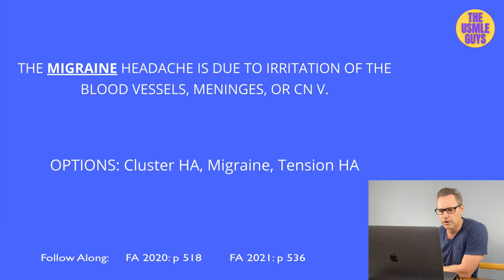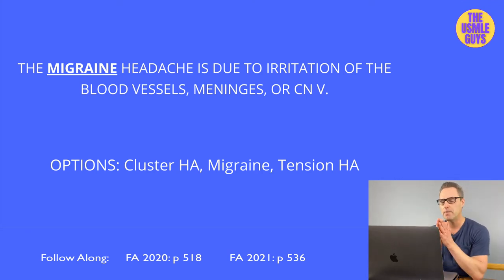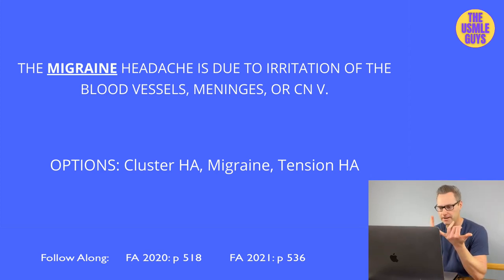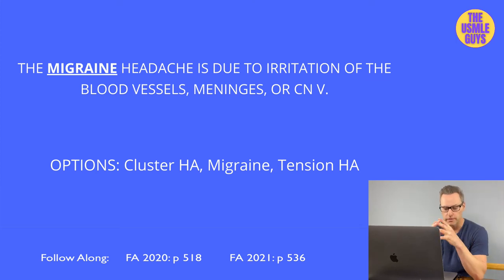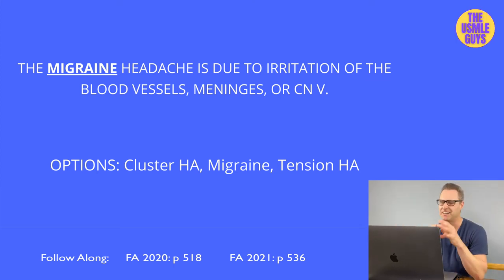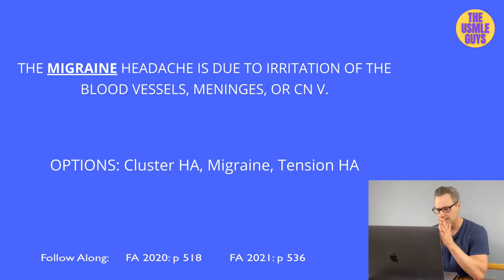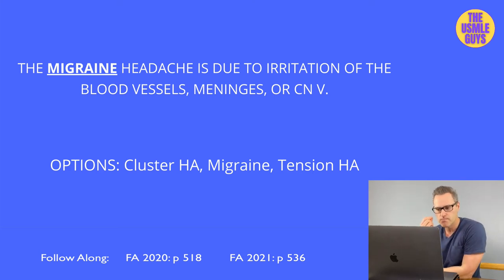The correct answer is migraines. Migraines are unilateral and quite severe, typically presenting with pulsating or throbbing pain, often accompanied by nausea, vomiting, aura, photophobia, and phonophobia. Patients often say a dark, quiet room provides the only relief. The underlying cause can be irritation of the meninges, blood vessels, or cranial nerve 5.